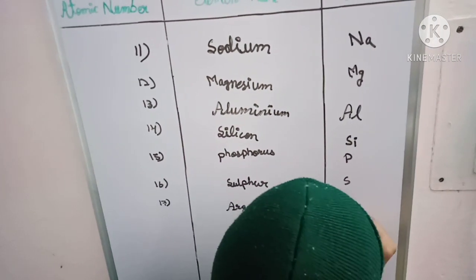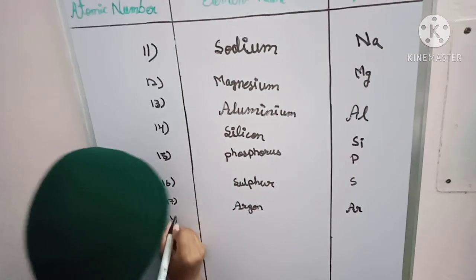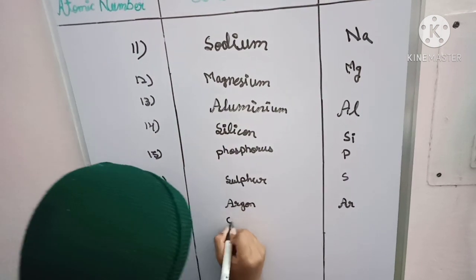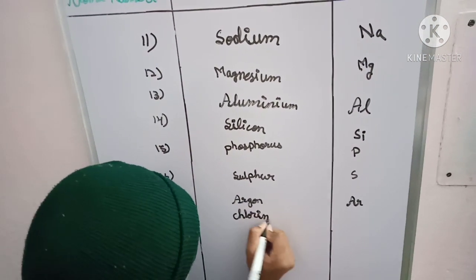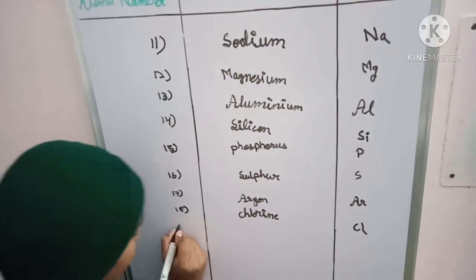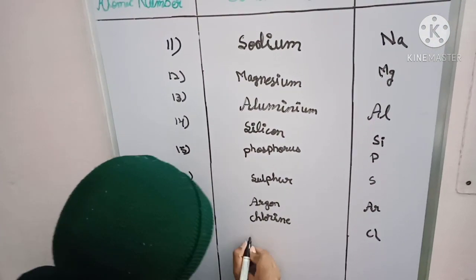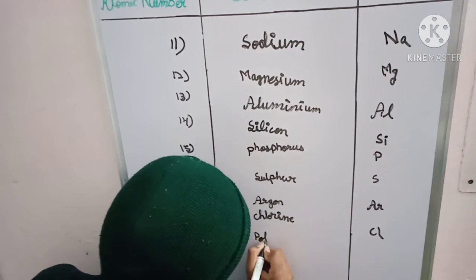18th one is chlorine, symbol is Cl. 19th one is potassium, symbol is K.